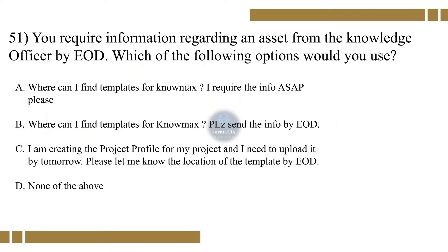Question 51. You require information regarding an asset from the Knowledge Officer by EOD. Which of the following options would you use? Option A: Where can I find template for Nomads? I require the info as soon as possible, please. Option B: Where can I find template for Nomads? Please send the info by EOD.